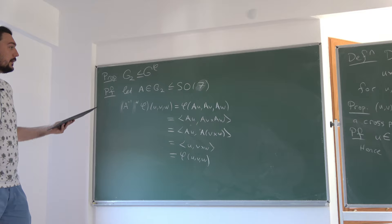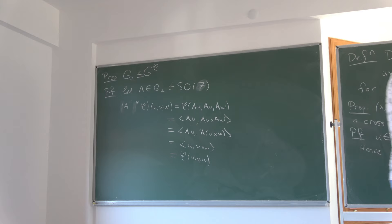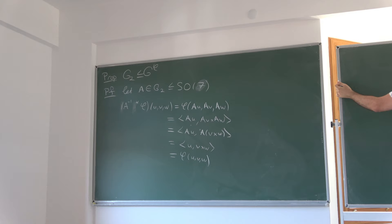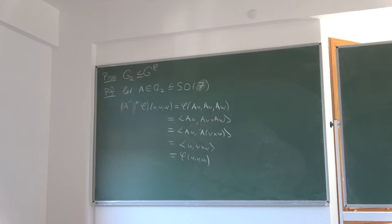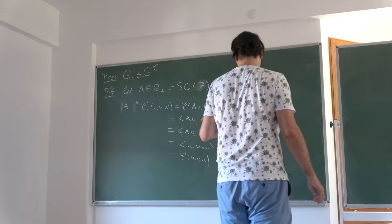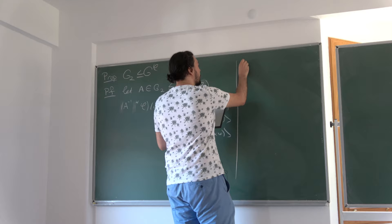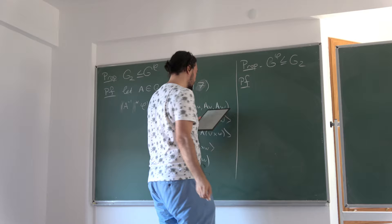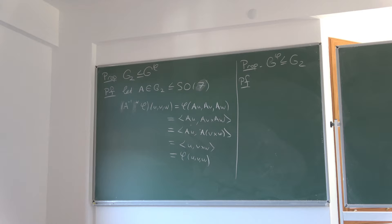Because A is in the stabilizer group of φ, using this equality we get that the inner product of Au with AV equals the determinant of A inverse times the inner product of u, v. Taking determinants of both sides viewed as a 7×7 matrix — the left side is det(AᵀA) = det(A)², and the right side is (det A⁻¹)⁷. So det(A)⁹ = 1, which over real numbers implies det(A) = 1. Therefore A is an element of SO(7). So G^φ ⊆ SO(7).